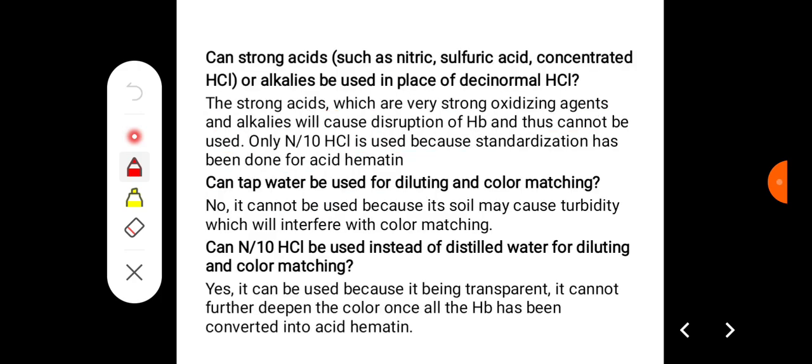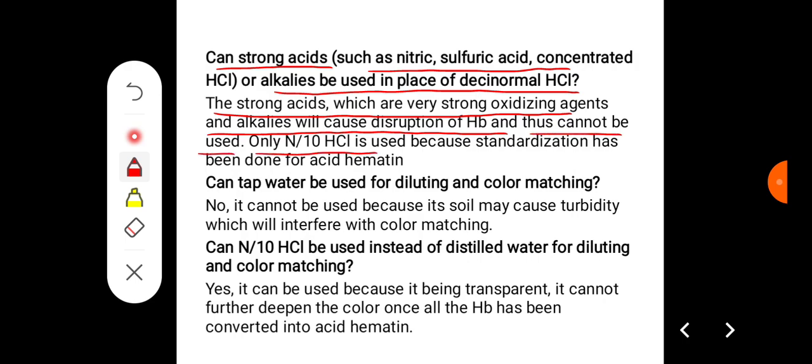Question: Can strong acids such as nitric, sulfuric acid, concentrated HCl, or alkalis be used in place of decinormal hydrochloric acid? The strong acids, which are very strong oxidizing agents, and alkalis will cause disruption of hemoglobin and thus cannot be used. Only N/10 HCl is used because standardization has been done for acid hematin.